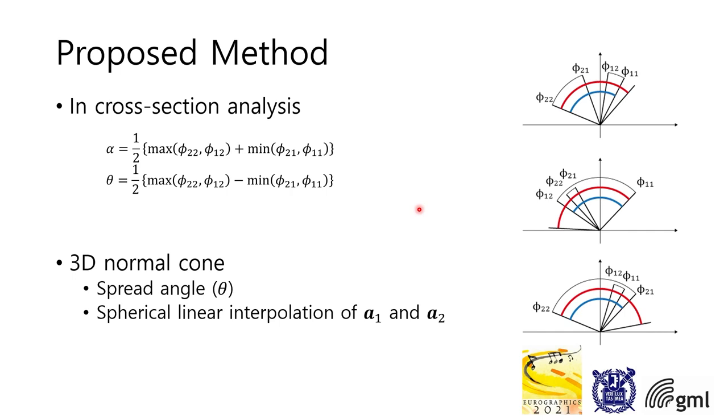So only using four angles, φ₁₁, φ₁₂, φ₂₁, and φ₂₂, we can easily obtain the maximum and minimum values of these angles. And it is the new range of result cones. So we can get new spread angles and the center angle corresponding to the axis of result cones by calculating this equation.